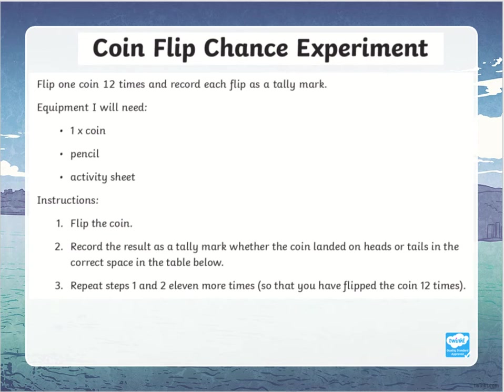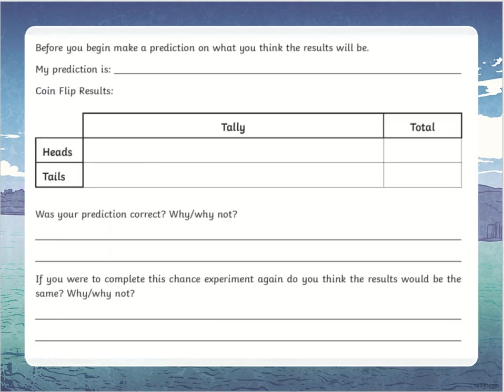The instructions are: you're going to flip the coin, record the result as a tally mark for whether the coin landed on heads or tails, and then repeat steps one and two eleven more times, so that you've flipped it a total of twelve times.